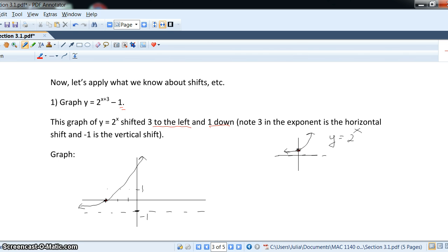And, one point we always know for any exponential is (0, 1). Where does that move? Well, that moves 3 units to the left, 1, 2, 3, right here at negative 3, and 1 unit down.